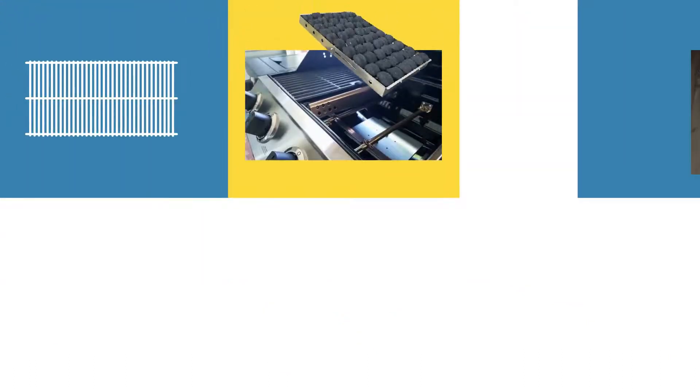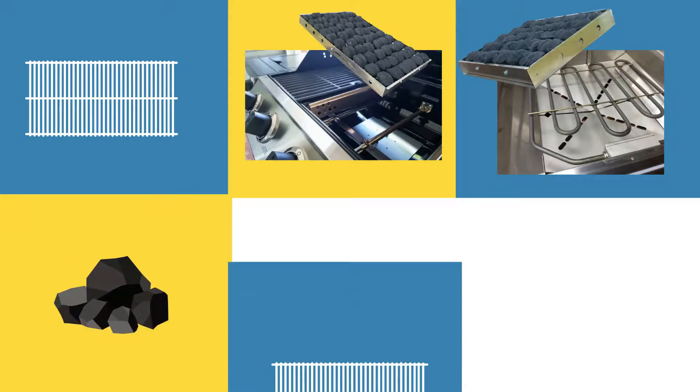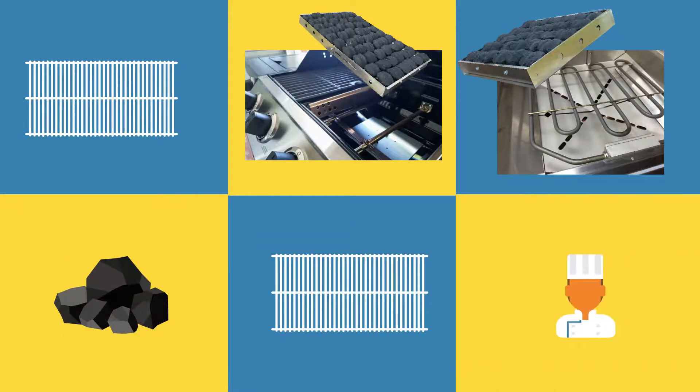To install, lift the cooking grates, place your tray over the heat shields or burner, add hot charcoal, replace the cooking grates, and get cooking!